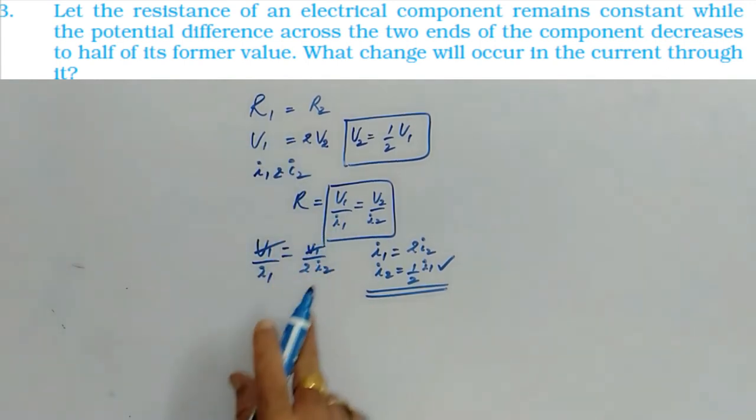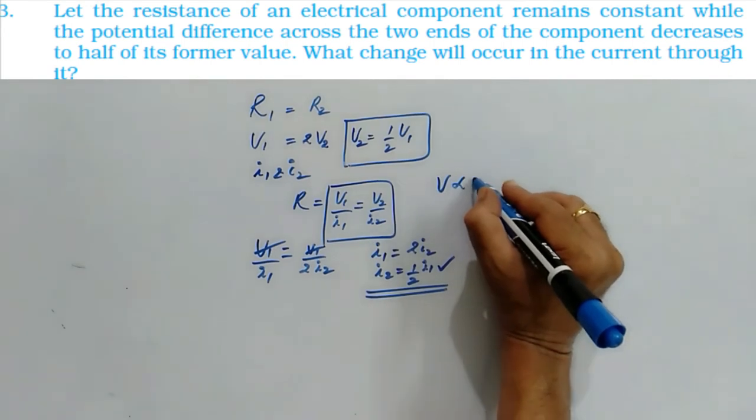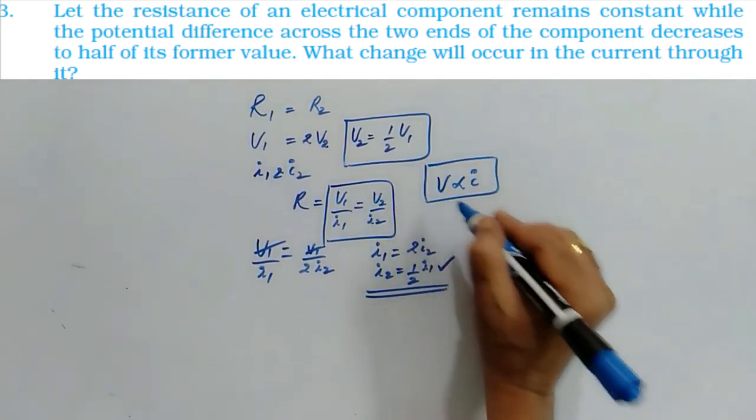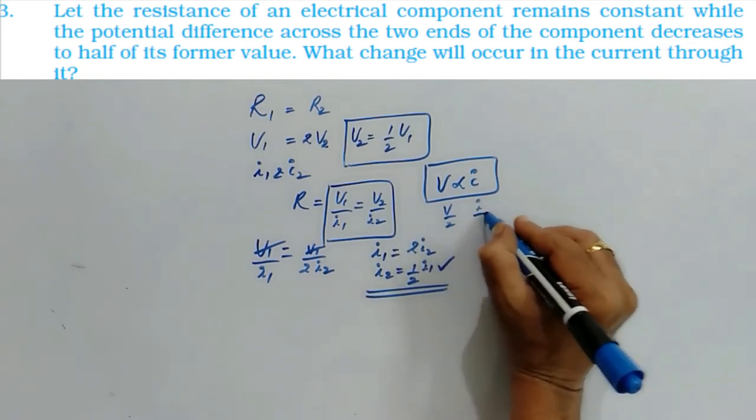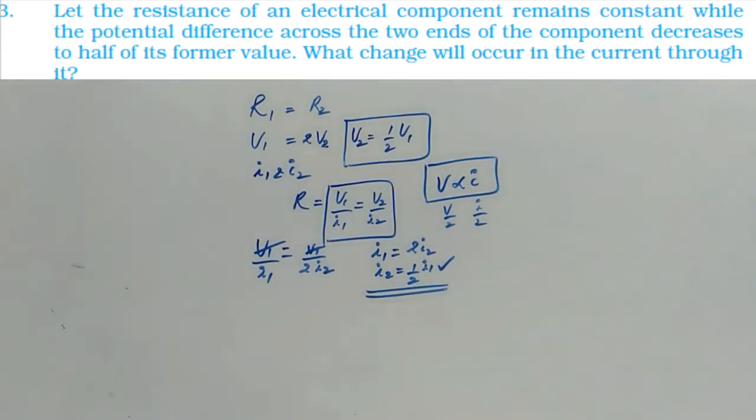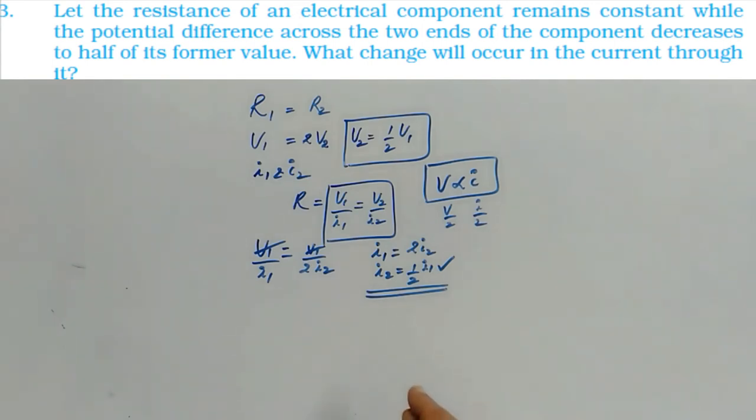Without doing anything, simply Ohm's law, V is directly proportional to I. So if V becomes V by 2, then I must be I by 2. Directly also we can give the answer by doing like this. Or otherwise, from Ohm's law, we can say if V is reduced to half, I is also reduced to half, because the resistance is unchanged. There is no change in temperature or area of cross section or length of the wire.